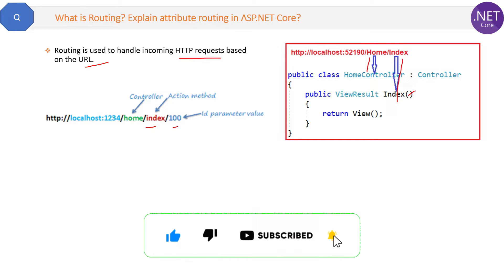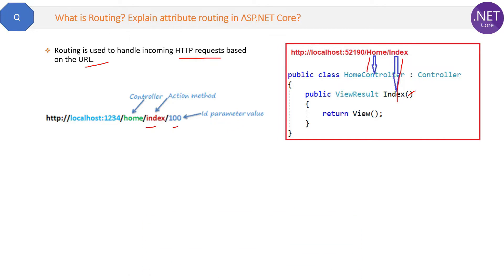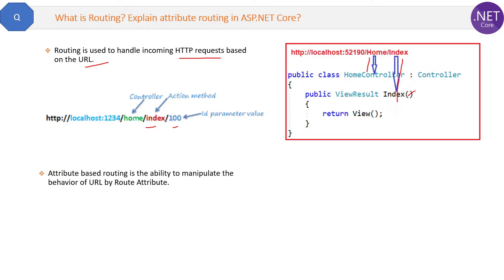Now let's check out the second part of the question. What is attribute-based routing? Attribute-based routing is the ability to manipulate the default behavior of the URL by using the route attribute.